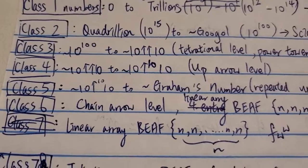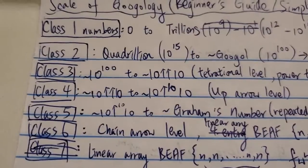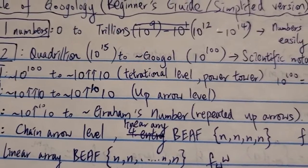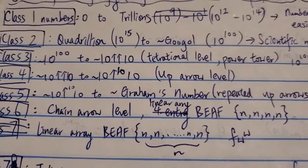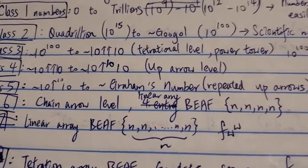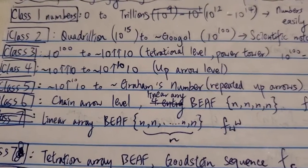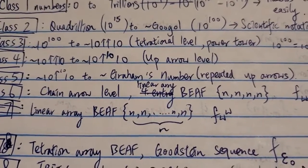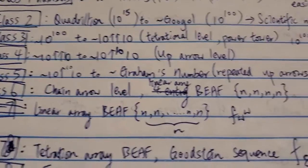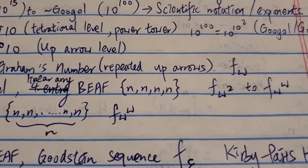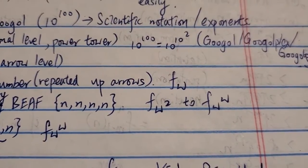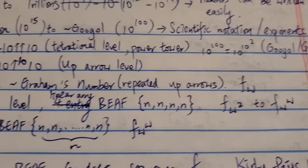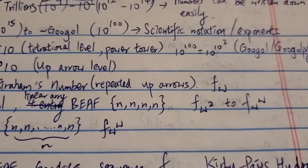Class 6 is, I call this the chain arrow level or the linear array BEAF. Basically, chain arrow or the BEAF level because these two are the most popular functions in this class. The growth rate is around f of omega squared to f of omega to the omega. Somewhere in that area.